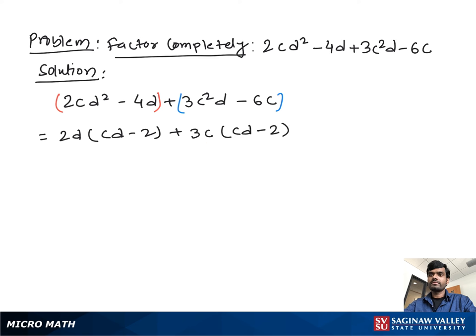Now from both sides we take out cd minus 2 as a common factor. Then we have left 2d plus 3c. And this is our final complete factorization.